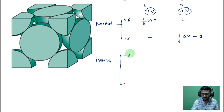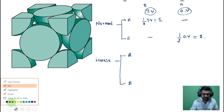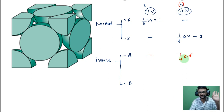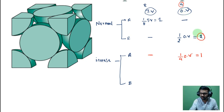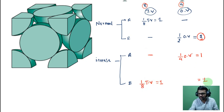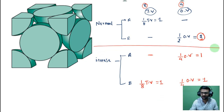In inverse spinel, A moves from tetrahedral to octahedral void, occupying 1/4 of the octahedral voids. B, which previously had 2 atoms all in octahedral, now splits: 1 atom in octahedral (1/4 of 4) and 1 atom in tetrahedral (1/8 of 8). The memory trick: if all of B is in octahedral void, it is normal spinel. If B is split between octahedral and tetrahedral, then A moves to octahedral — this is inverse spinel.